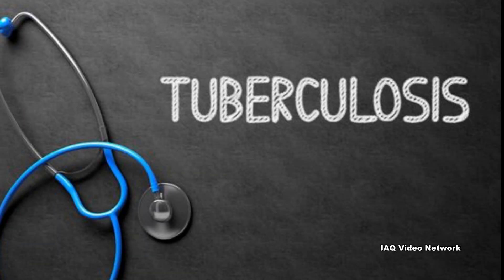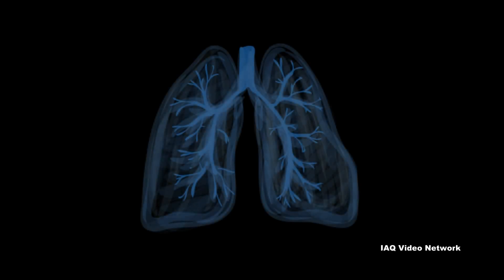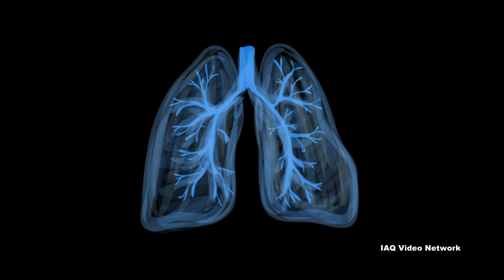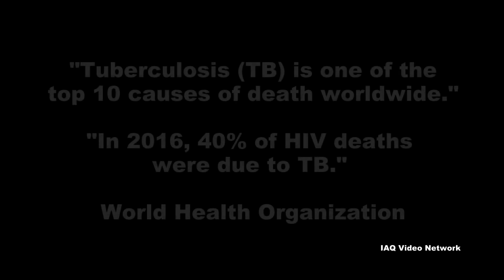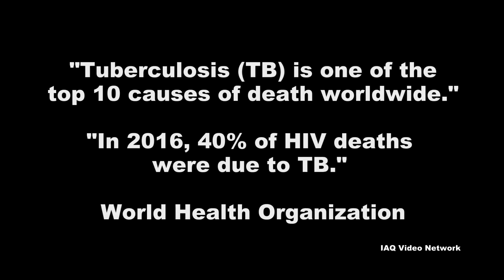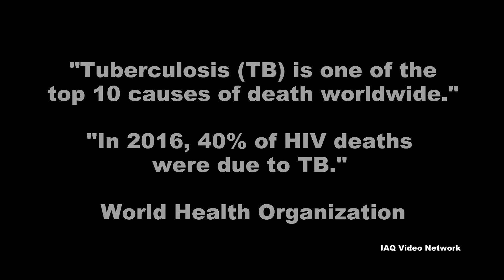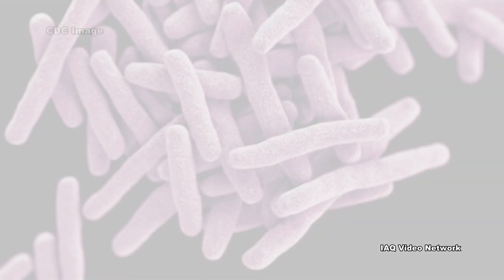For those who do become sick, the TB bacteria usually attacks the lungs, but it can attack any part of the body such as the kidney, spine, and brain. The World Health Organization reports that globally TB is one of the top 10 causes of death worldwide, and 40% of HIV deaths were due to the disease as recently as 2016.